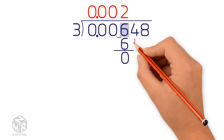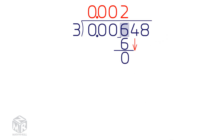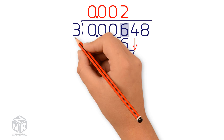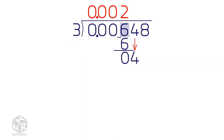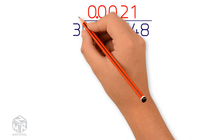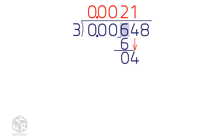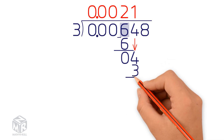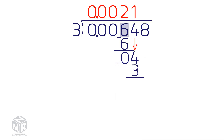Next, we bring down the 4. We ask ourselves how many 3's go into 4. One 3 goes into 4, so we write a 1 directly above the 4. Multiply 3 times 1 and write the product directly underneath the 4. Now we subtract and we get 1.